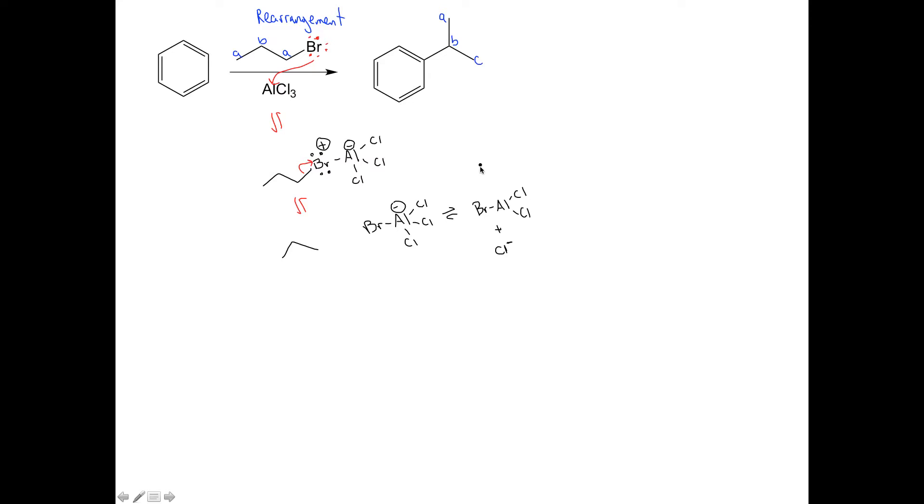But I want to go back to the important part here, my alkyl halide. Let's draw in our hydrogens here. So that species has two hydrogens. The middle carbon has two hydrogens. And let's just label these.